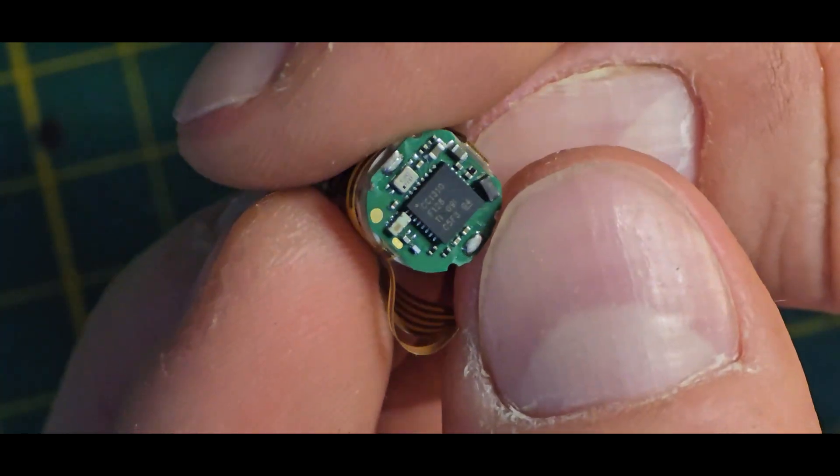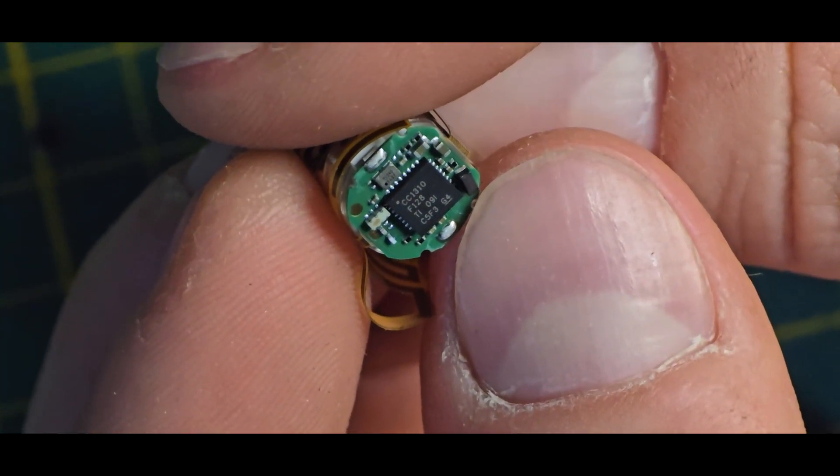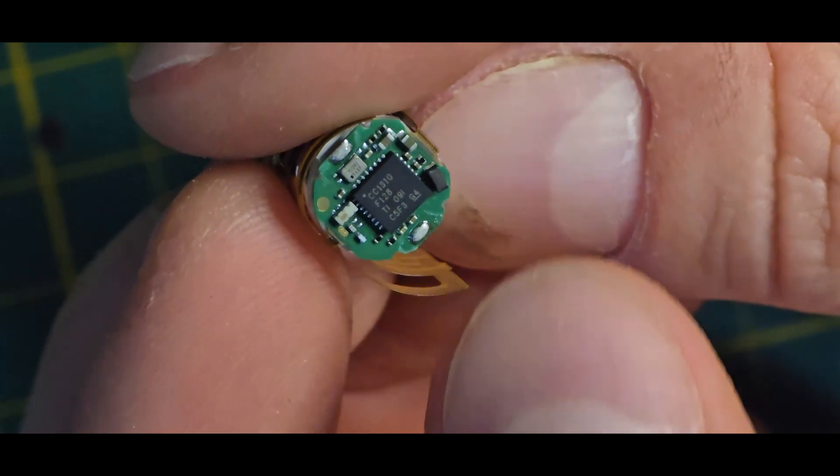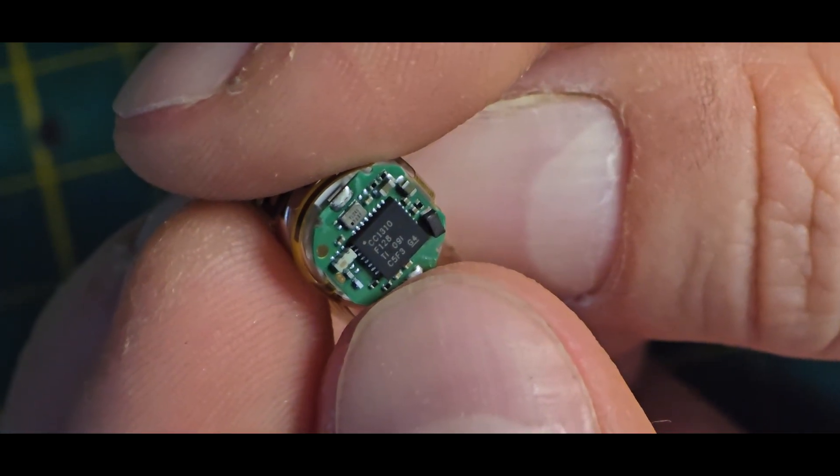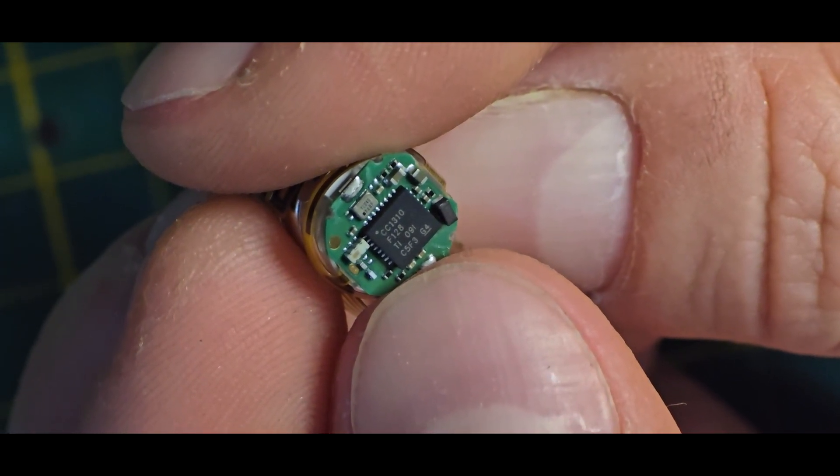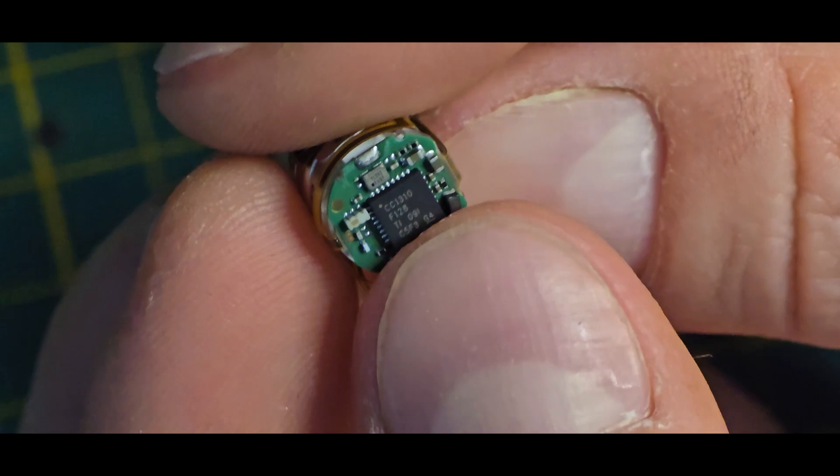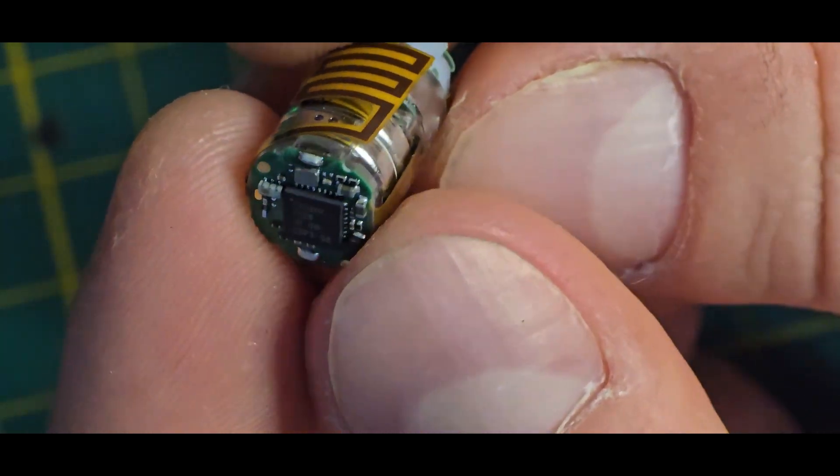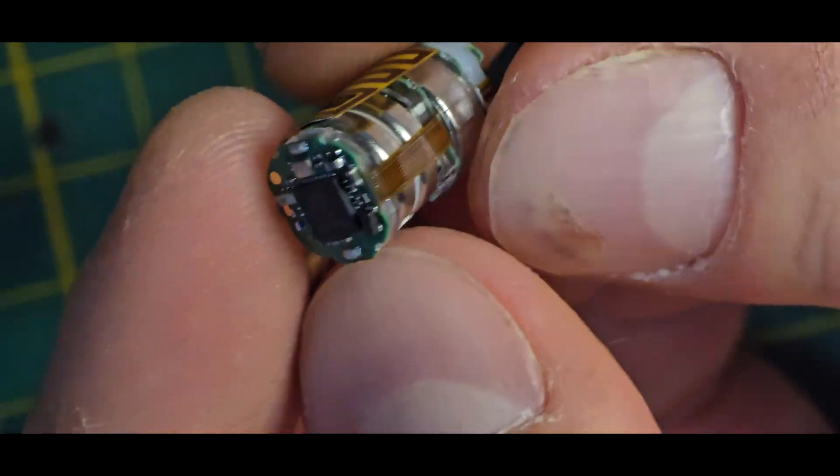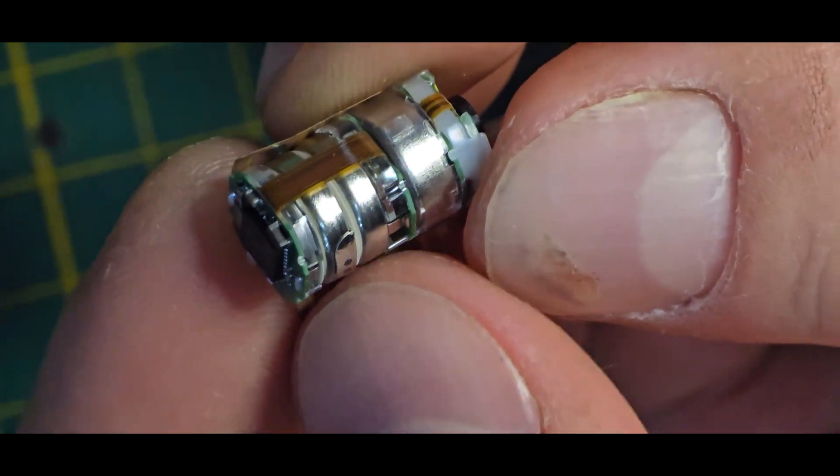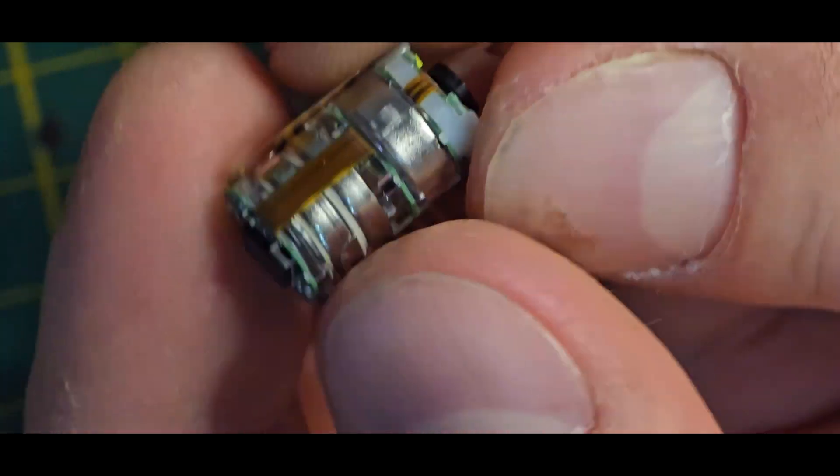Oh and nice, you can see a microcontroller already. Very nice, that's a Texas Instrument CC1310 which is basically a normal microcontroller and if it's not locked we even can read out the firmware. Okay this is interesting definitely.